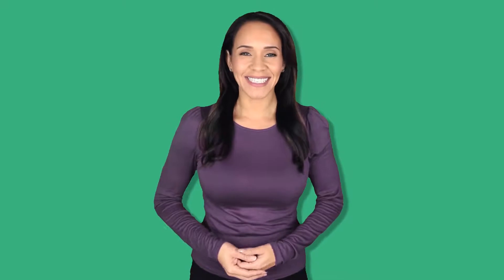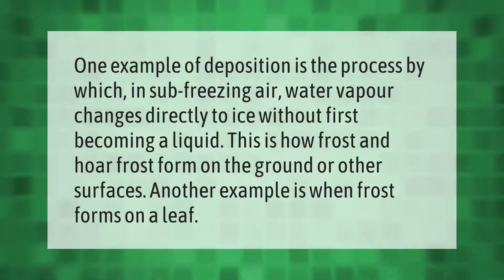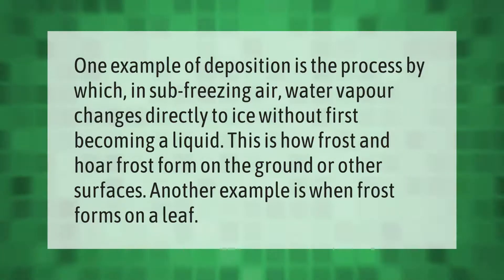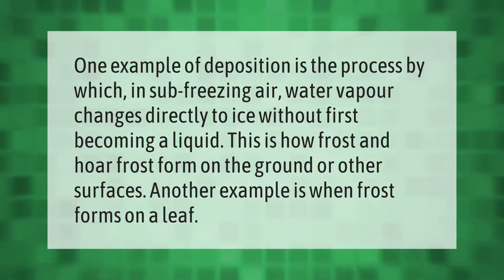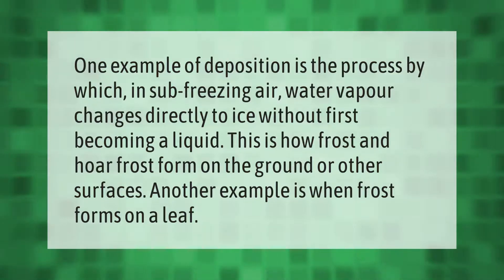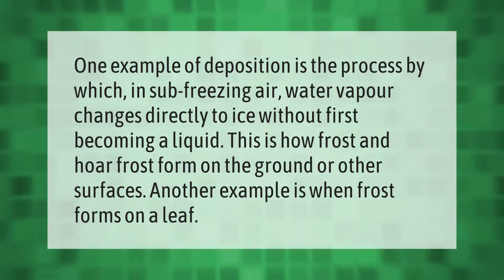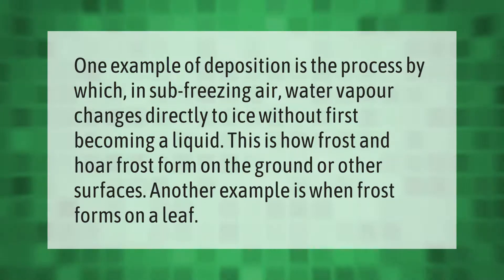One example of deposition is the process by which, in sub-freezing air, water vapor changes directly to ice without first becoming a liquid. This is how frost and hoar frost form on the ground or other surfaces. Another example is when frost forms on a leaf.